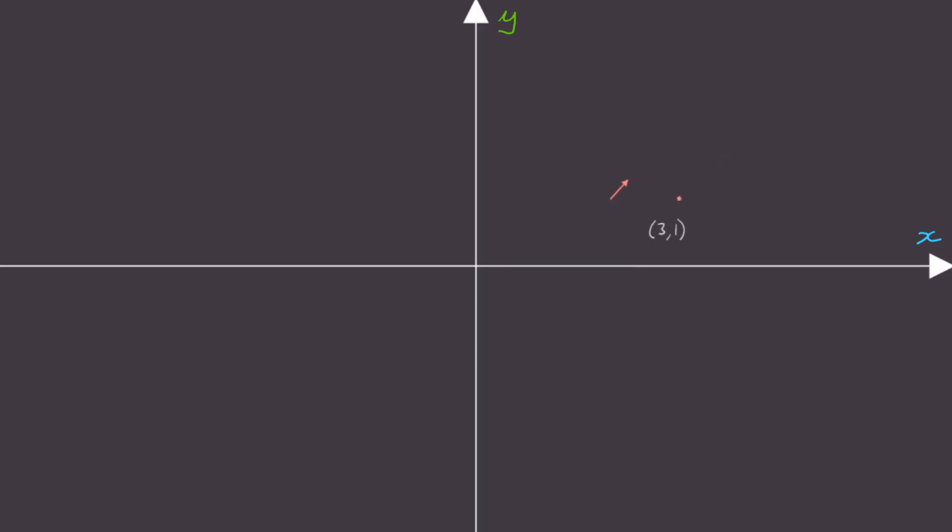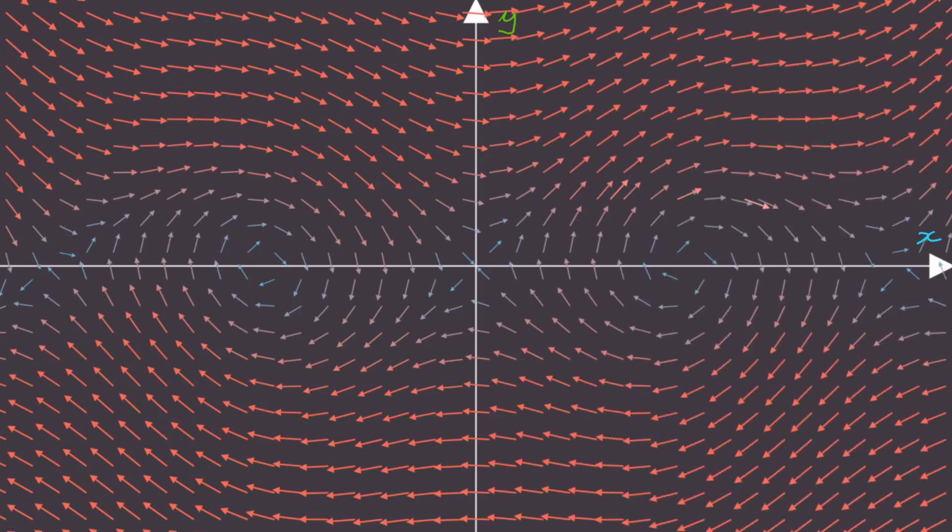And at the point 3 comma 1, then the vector will be f of 3, 1, g of 3, 1. And at the point 4, 1, then the vector will look like this. And if we do this for all points, then we will get a vector field like I'm showing here.